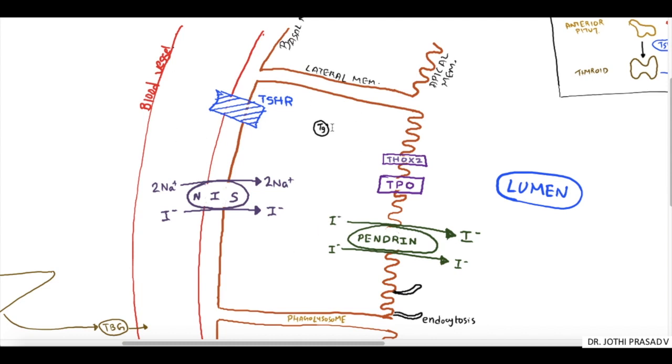I have depicted a thyroid follicle here with an adjacent blood vessel or a capillary and the lumen here. The thyroid follicle has three membranes. The membrane adjacent to the capillary is called a basal membrane, the membrane adjacent to the other thyroid follicle is a lateral membrane, and the membrane facing the lumen is called the apical membrane. The basal and apical membrane has certain channels and enzymes which are responsible for transport of charged particles, especially iodide, through the follicle and through the lumen.